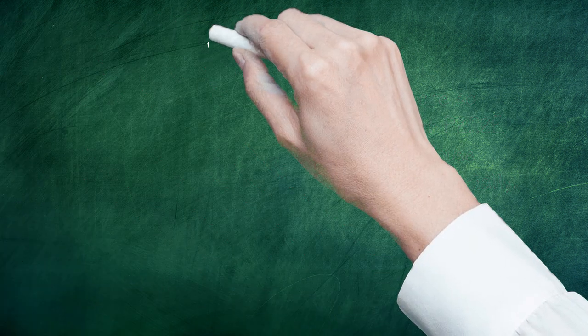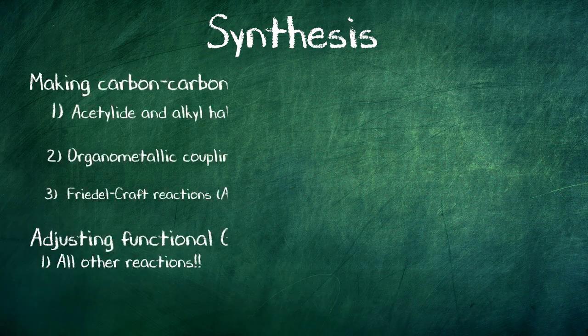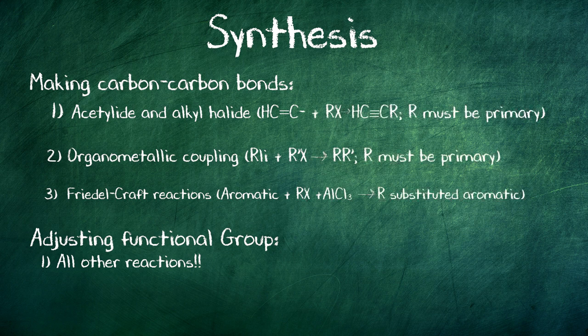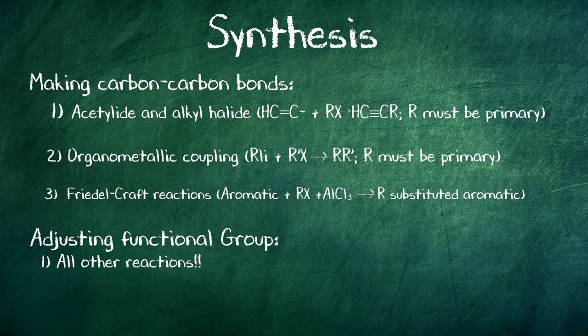Many tools have to be mastered before someone can create new materials. The first type of tools is the ability to make carbon-carbon bonds. In Organic Chemistry 1, depending on the school, this is usually covered in three reactions.